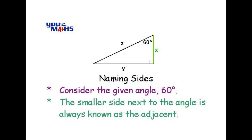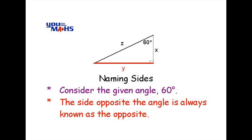So adjacent is determined by which side is next to the angle. The opposite is the side away from or opposite the angle, so that's changed as well — in this case it's marked in red with the Y.